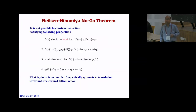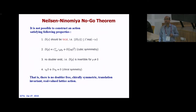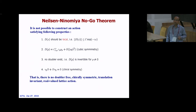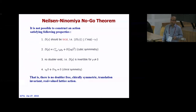There is a theorem that says you cannot write an action with all of these properties simultaneously: local (decaying faster than exponential), hypercubic symmetry, no doubler, D invertible, and chiral symmetry. They showed it is not possible even in the continuum to have a theory preserving all of these. So there is no doubler-free, chiral-symmetric, translationally invariant, real-valued lattice action.